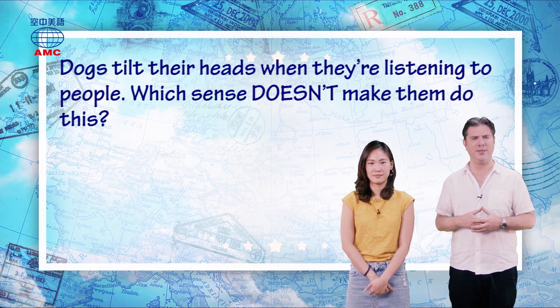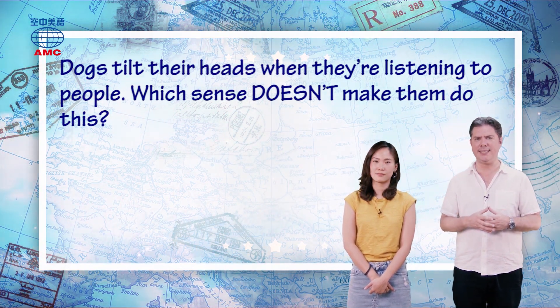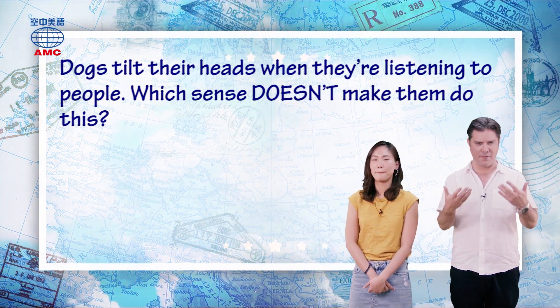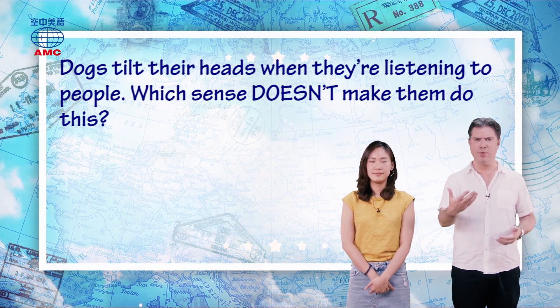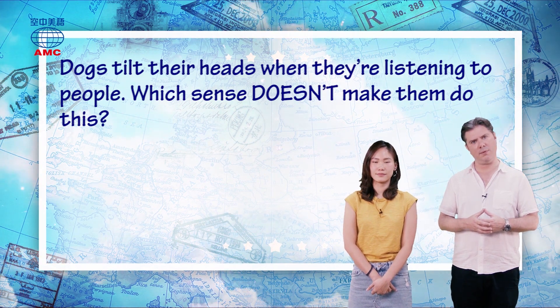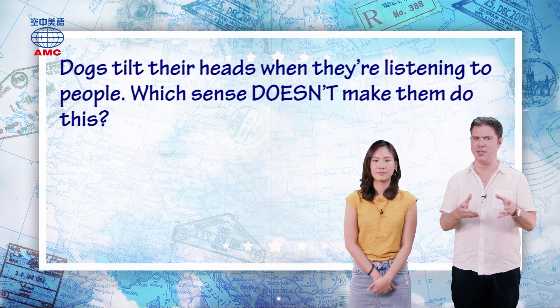Our article begins with an interesting question. Dogs tilt their heads when they're listening to people. Which sense doesn't make them do this? We're going to get into some of the science of it. We all have to agree — you've probably seen it in real life, on TV, or even in a cartoon: the dog tilts its head, often when a person is talking to it.